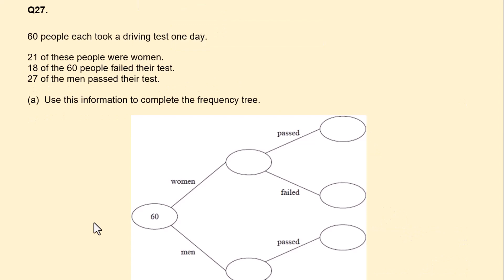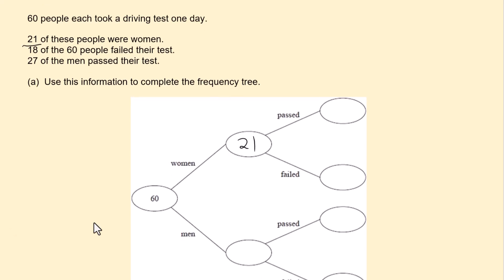60 people took a driving test one day. 21 of these people were women. So 21 were women. 21. 18 of the 60 people failed their test. So failed 18 of the 60 people. And we don't know whether they are men or women. 27 of the men passed their test. So let's put that down. 27 of the men passed their test. 27. Now we can find out the number of men by taking away the number of women, which is 21.